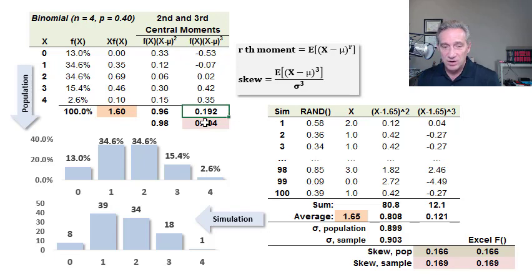Now, this third central moment, well, recall that the variance isn't really that intuitive, it's in units squared. Well, the third central moment is even less intuitive, it's in units cubed.